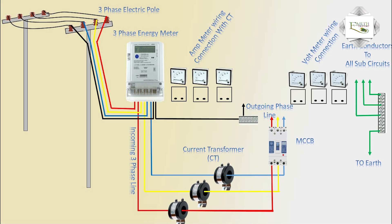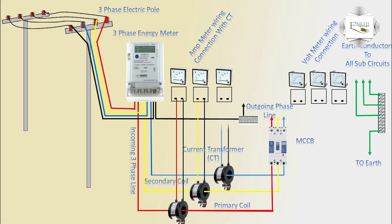CT is used to calculate the current. Primary coil is red, yellow, blue cable — primary coil working. Secondary coil is CT — CT1, one, two, three — secondary coil count. First CT1 connection to ammeter. Second CT connection to yellow ammeter. Third CT connection to blue ammeter.